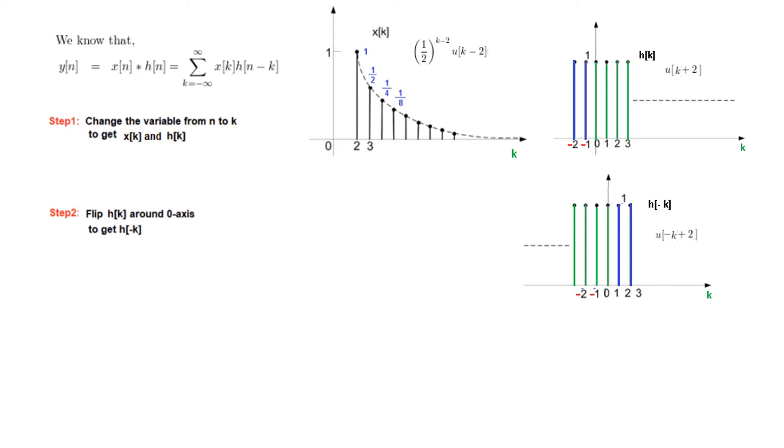And also the name it was u[k+2], it will now be u[-k+2]. And the third step is that move the function further left to a point n to get h[n-k]. So what we have done is we have moved it to an unknown point and we call that point n. So now 0 will become n. And so on the right hand side, it will become n+1, n+2.